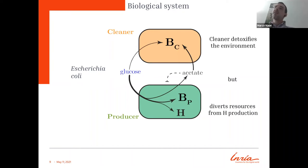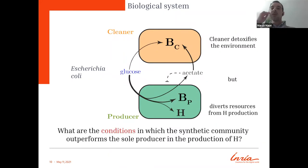But here there is a point. Actually the cleaner, it's true that it detoxifies the environment, but at the same time takes out, so diverts resources such as glucose from the production of the H protein. So asking what are the conditions in which the synthetic community outperforms the sole producer in the production of H is actually not a trivial question, and we tackle this question by creating a coarse-grained model.